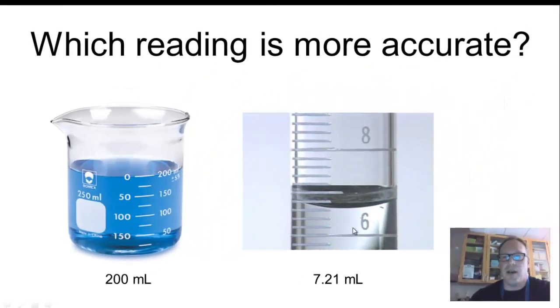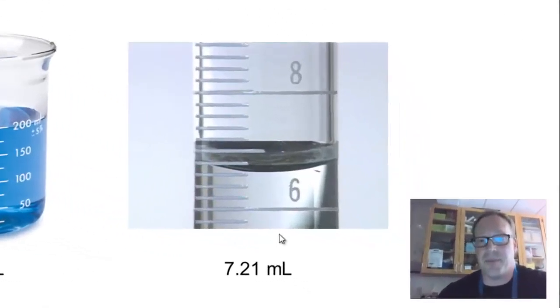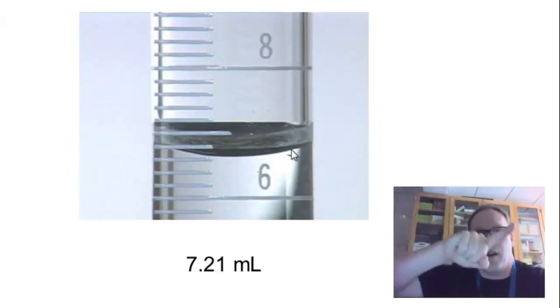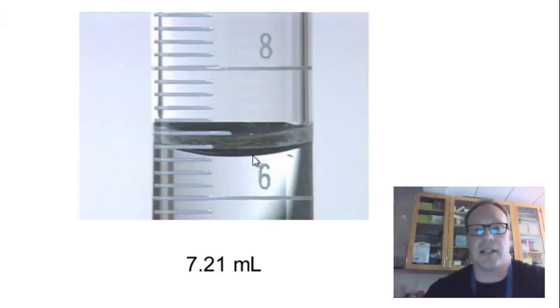Now, if you look at the graduated cylinder, the 7.21, as it turns out, even though it's more precise, is not accurate. This line down here marks 6 or 6.0 mL on this graduated cylinder. This line up here marks 8 or 8.0 mL on this graduated cylinder. This line, which is not as long as those other lines, but halfway in between those two would be 7. And when you read how much liquid is in a container, very often what you'll see is that there's a curvature, what we call a meniscus when we look at liquid in a cylinder like this, a glass container.